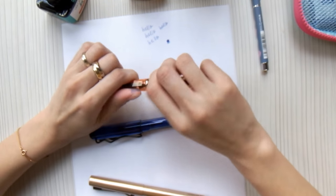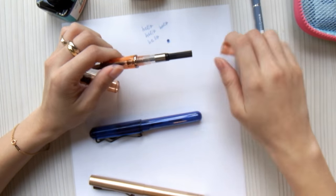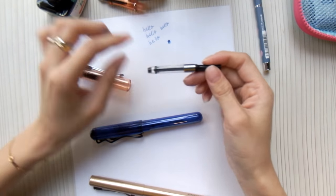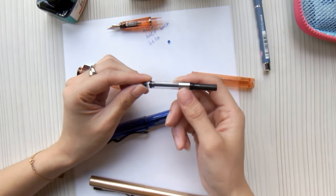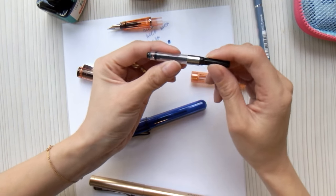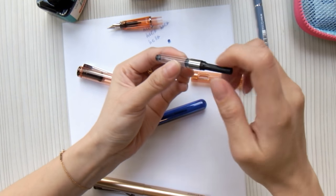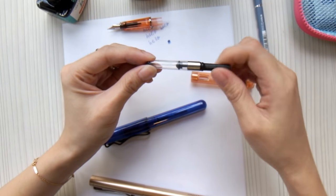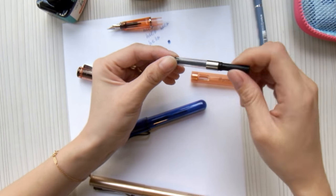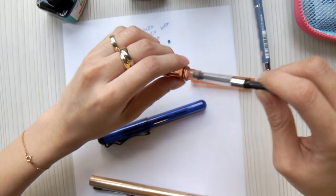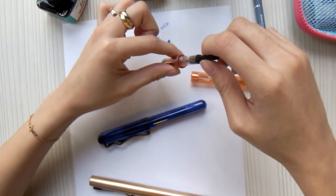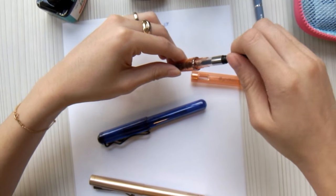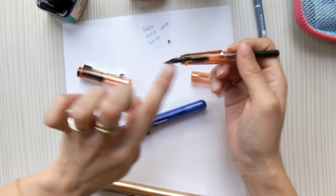This is a Jin Hao pen that we include in the previous pen box. Twist it open and this is how the converter looks like. As you can see, this converter is much bigger. That means you will be able to hold more ink. And the converter is, you have to twist to push the level up and down by twisting. So you twist it down. Then you soak it into your, dip it into your fountain pen ink bottle and just twist it back up. Then you should be all set.